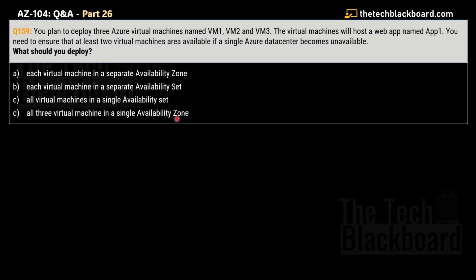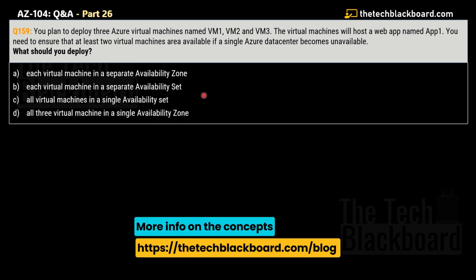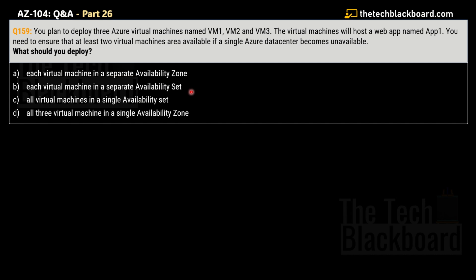Question number 159. You plan to deploy three Azure virtual machines: VM1, VM2, and VM3, which will host a web app named App1. You need to ensure that at least two virtual machines are available if a single Azure data center becomes unavailable. What should you deploy? Options are: A — each VM in a separate availability zone; B — each VM in a separate availability set; C — all VMs in a single availability set; D — all three VMs in a single availability zone. This is a deep question requiring understanding of both availability zones and availability sets.